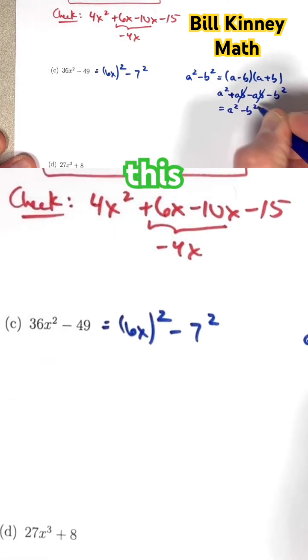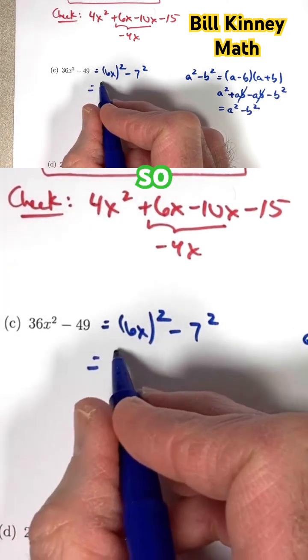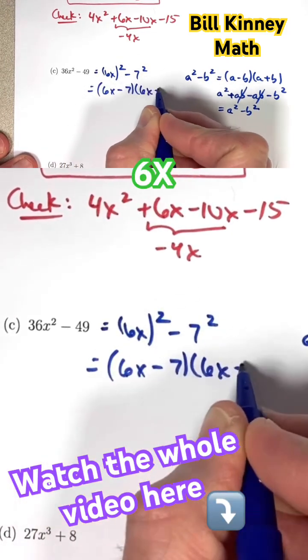When you check it, this always works. So here a is 6x and b is 7, so we get (6x - 7) times (6x + 7).